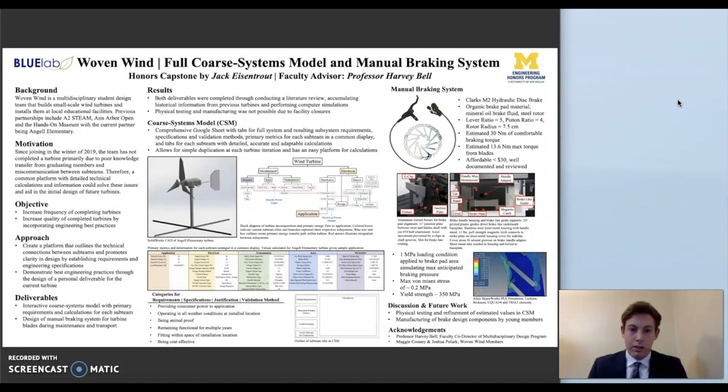Another is designing some personal mechanical design deliverable that younger members can use for reference in their mechanical designs and just serve as an example for the future. That mechanical deliverable turned into the manual braking system for the blades because it was not being worked on at the time. Essentially that is used any time we want to do maintenance on the turbine or maybe during testing or any time we want to safely slow down the speed of the blades.